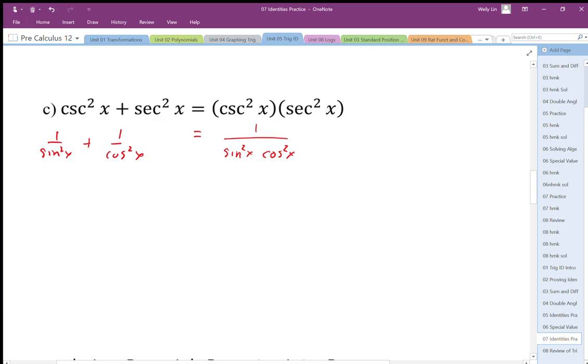the denominators match left side and right side which is definitely the right direction. So I'm going to multiply by cos squared over cos squared and sine squared over sine squared to get my denominator of sine squared cos squared.